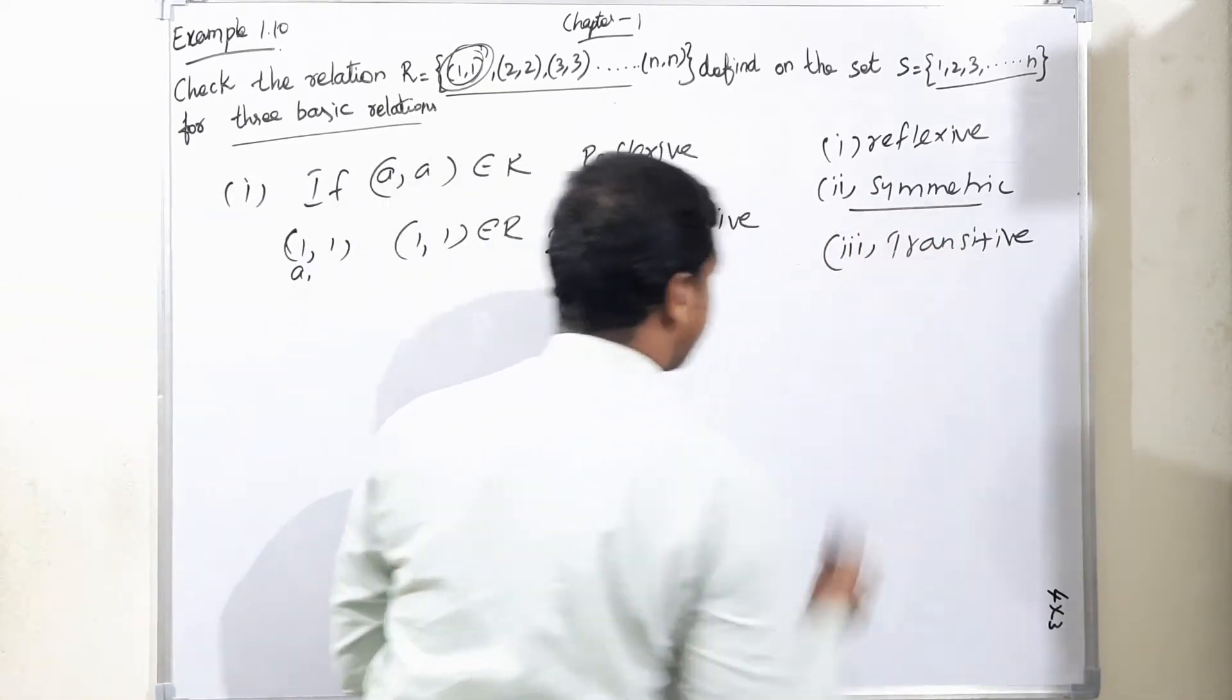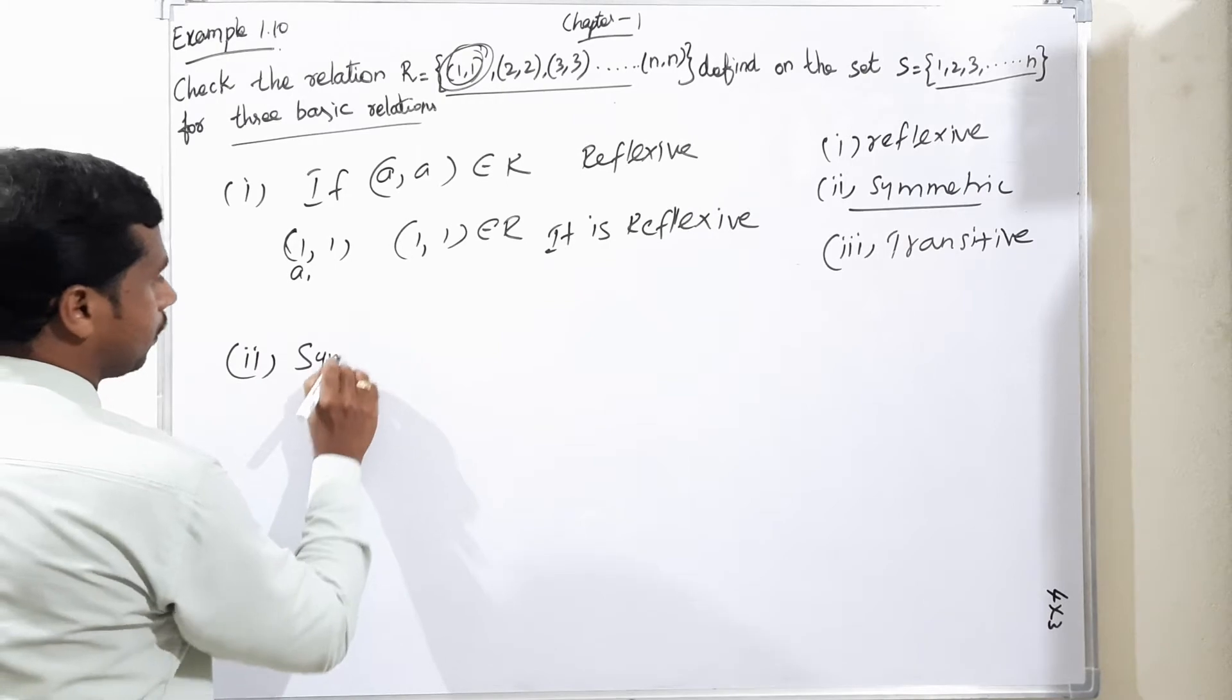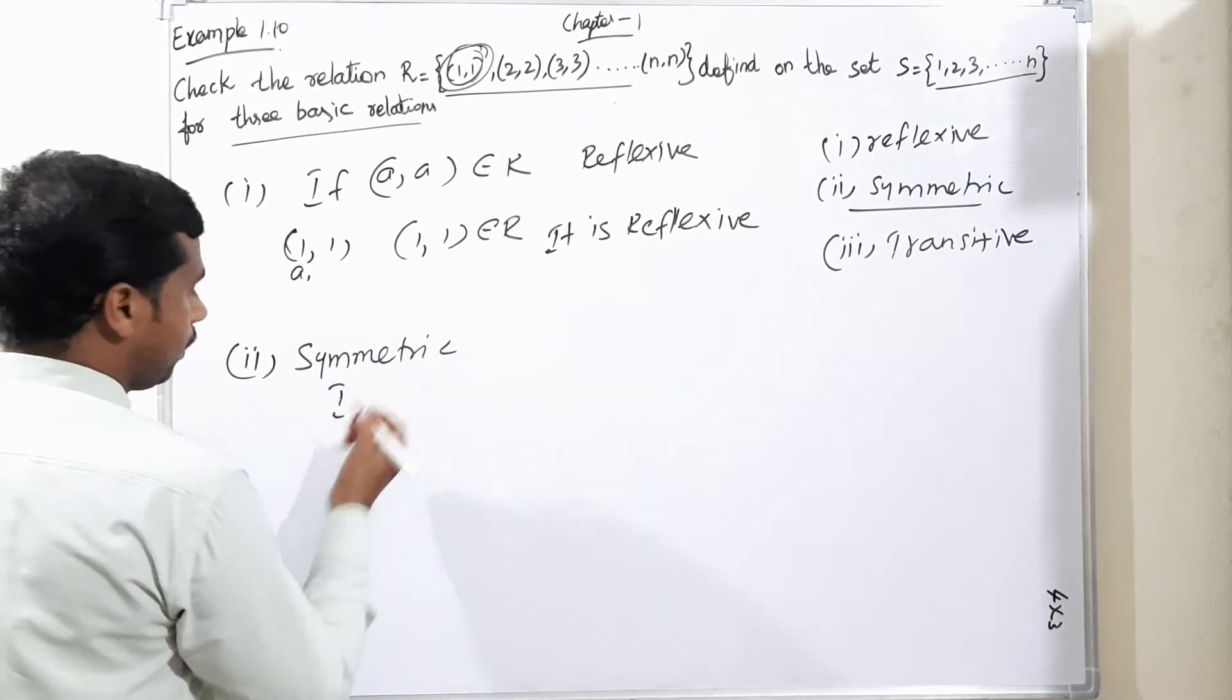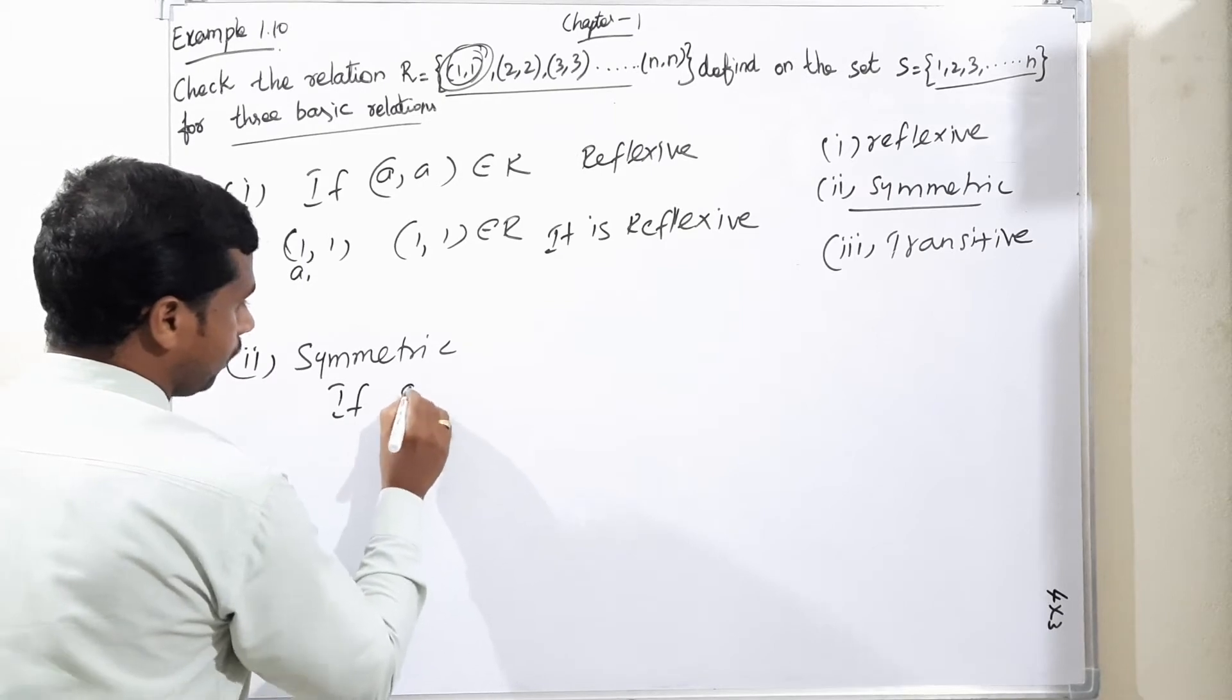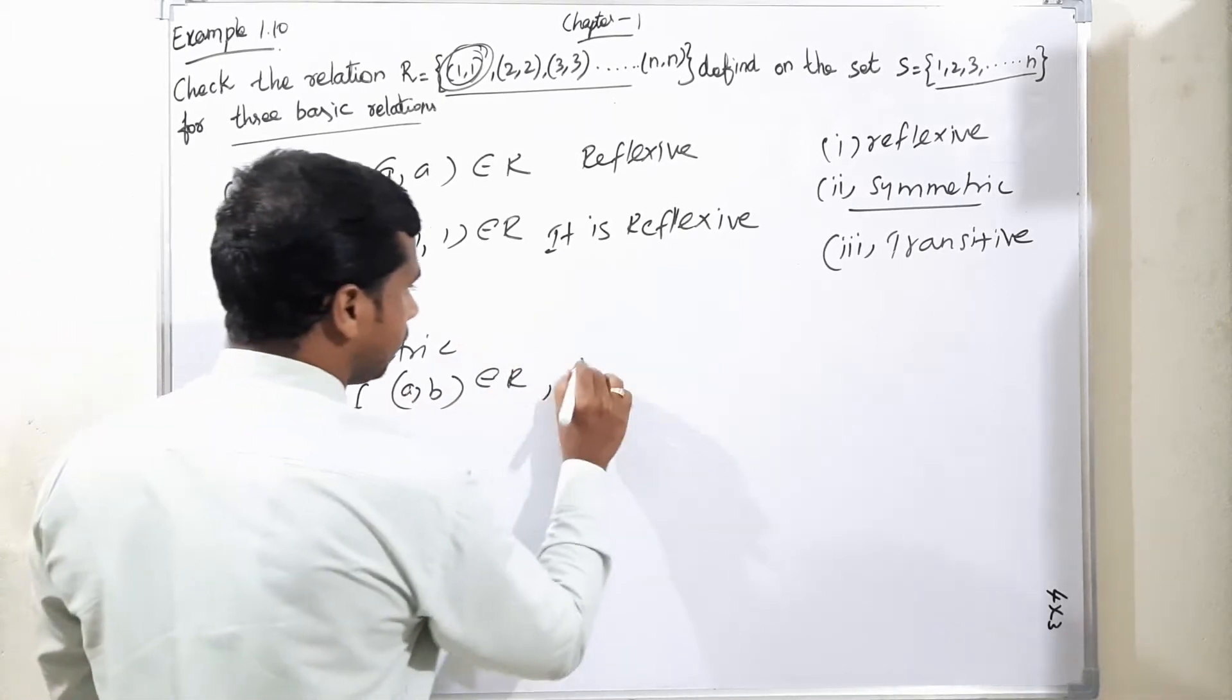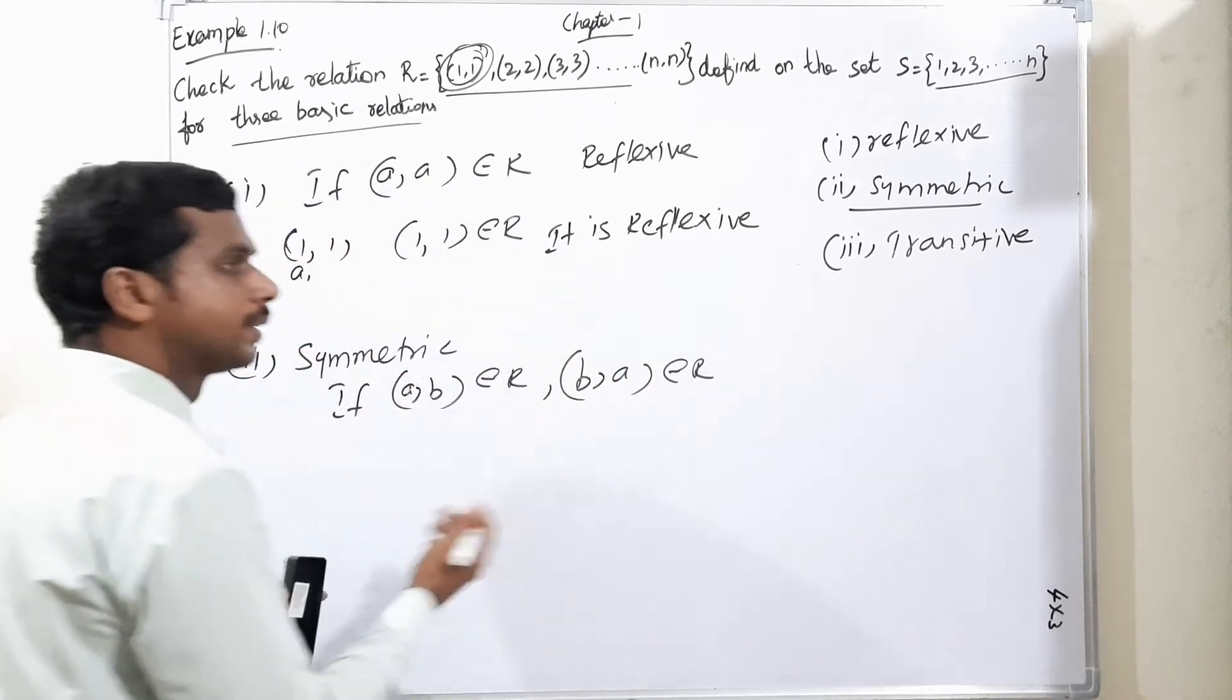I am moving to second condition, symmetric. If (a,b) belongs to R, then (b,a) also belongs to R. That is called symmetric.